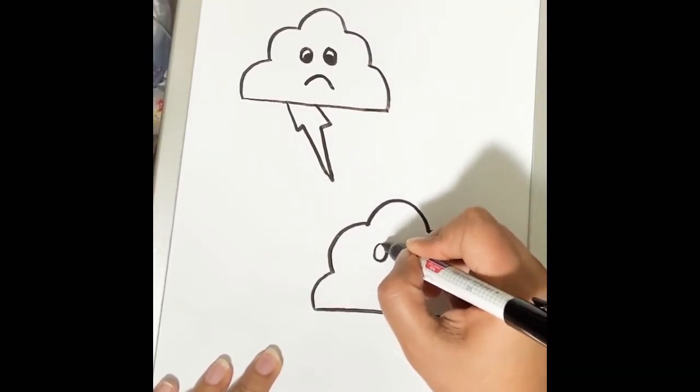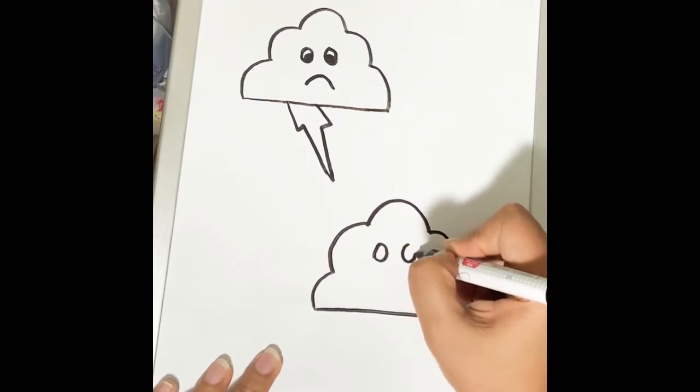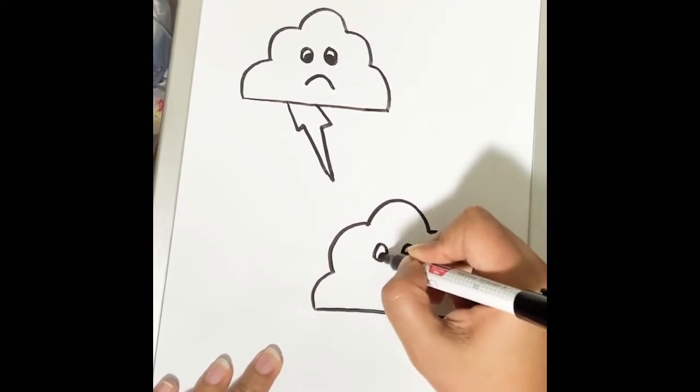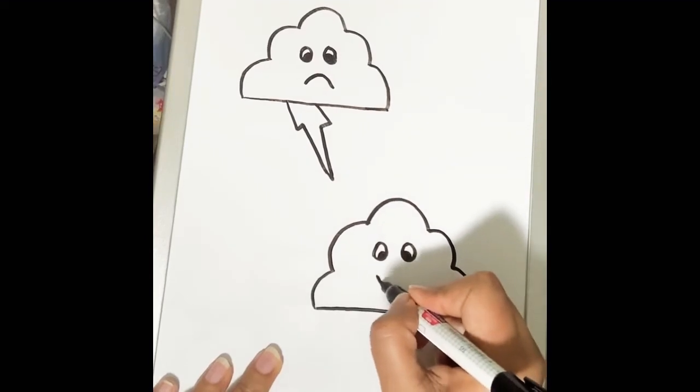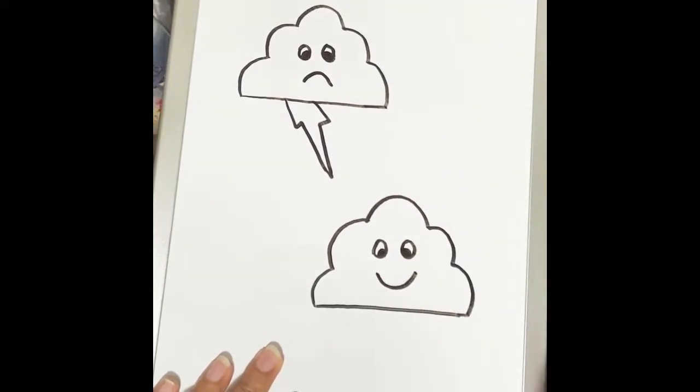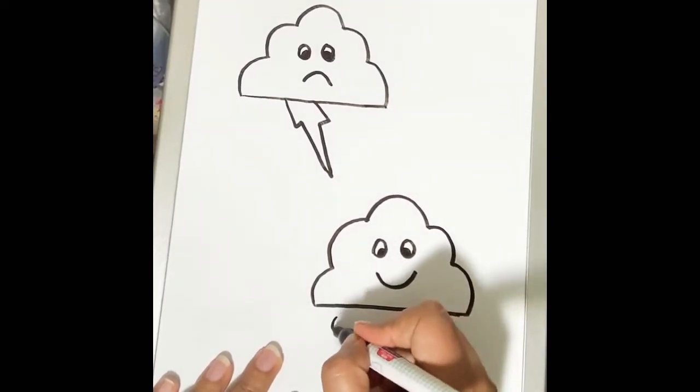So that they can go outside and play. So here we'll make a smiley face. So I'll make a big smiley face. And we will show the rain droplets.